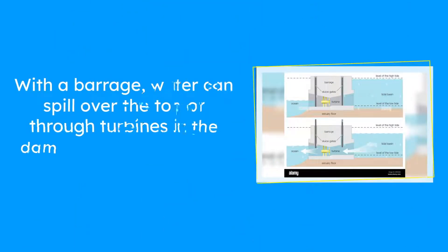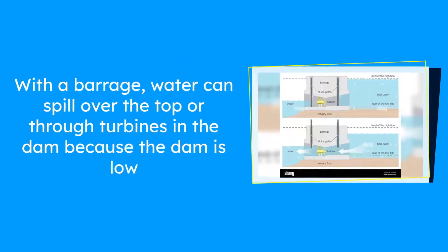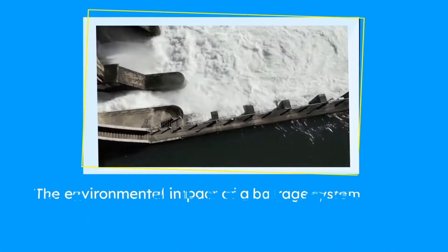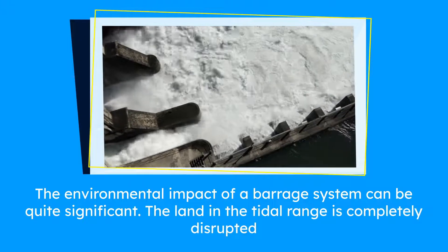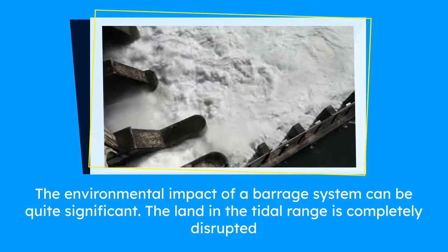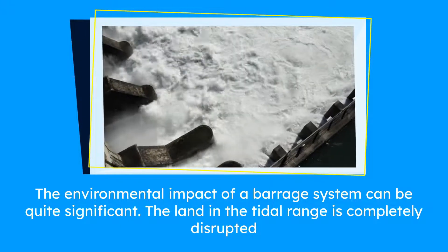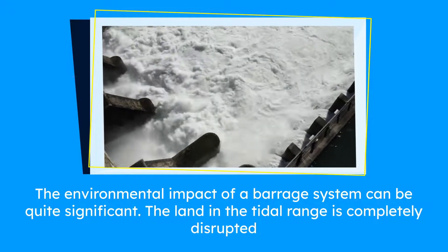Barrage system: With a barrage, water can spill over the top or through turbines in the dam because the dam is low. The environmental impact of a barrage system can be quite significant, as the land in the tidal range is completely disrupted.